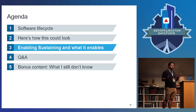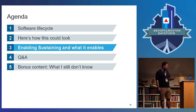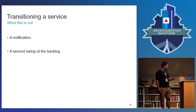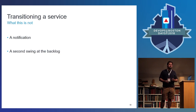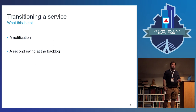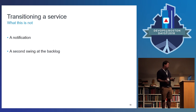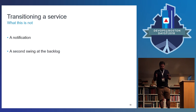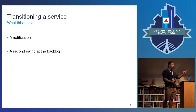Topic three: once we've decided sustaining engineering is something we want to do, how do we enable it — and what does this enable the business to do? I'd like to start with transitioning a service. The easiest thing I can say is this is not throwing something over the wall. Like everything else in DevOps, this is about a conversation — different teams working toward the same end goals. This is not 'we're all done with this, it's yours now, have fun.' It's also not a second swing at the backlog. We've moved from the feature growth phase to the supported and sustaining phase — it's not about sending the last things to the bush leagues.